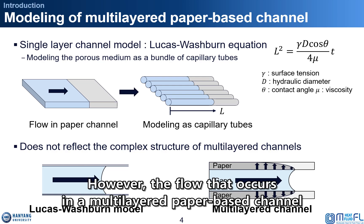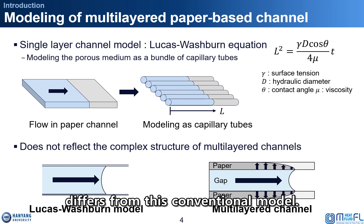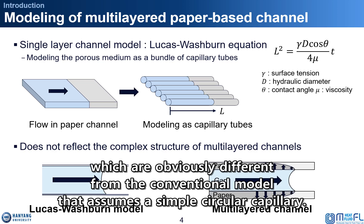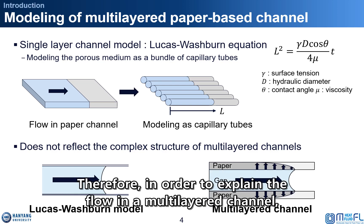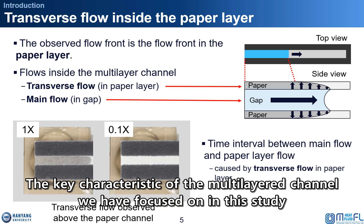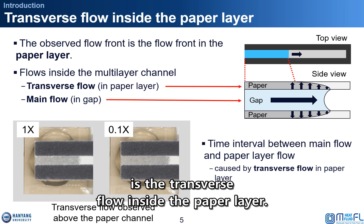However, the flow that occurs in a multi-layered paper-based channel differs from this conventional model. This difference is due to the complex structure of multi-layered paper channels, which are obviously different from the conventional model that assumes a simple circular capillary. Therefore, in order to explain the flow in a multi-layered channel, it is necessary to understand the flow patterns that occur in this complex structure. The key characteristic of the multi-layered channel we have focused on in this study is the transverse flow inside a paper layer.